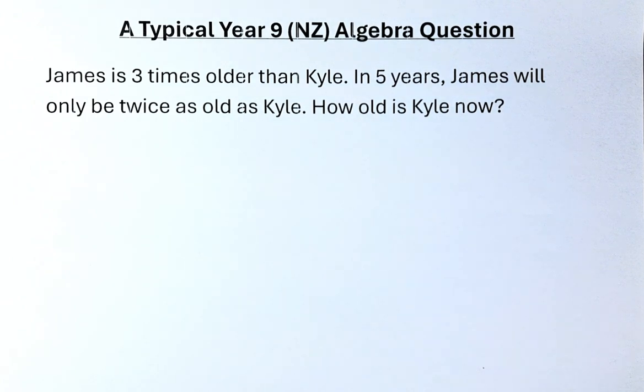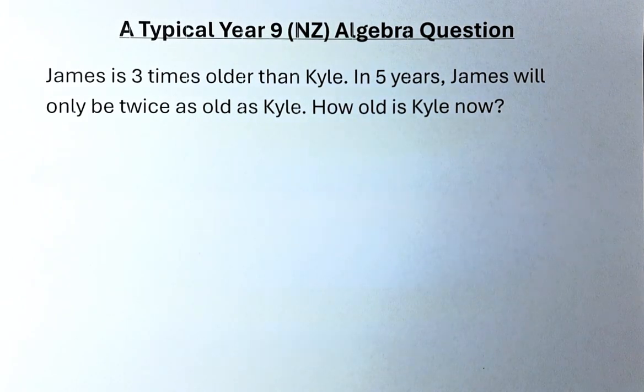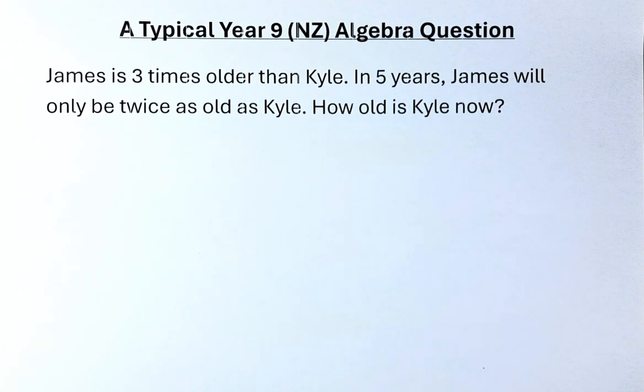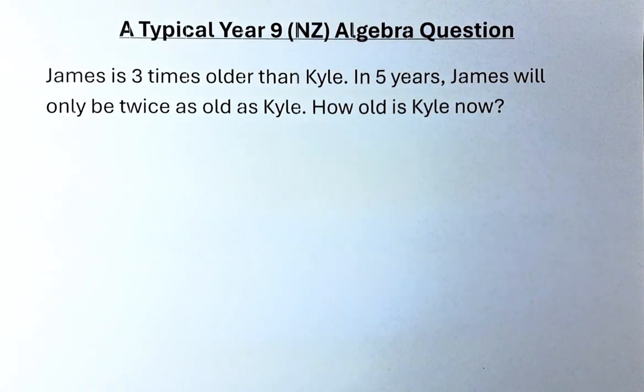James is 3 times older than Carl. In 5 years time, James will only be twice as old as Carl. How old is Carl now?